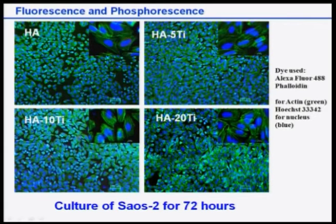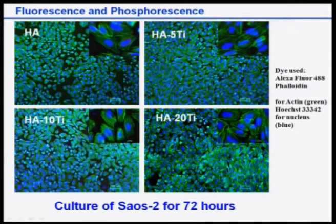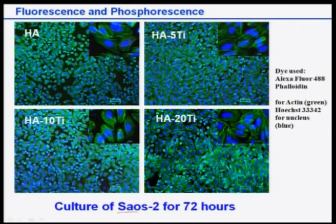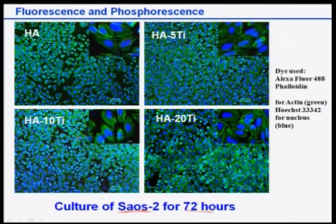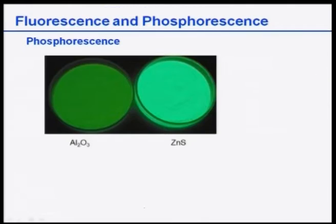This technology uses the concept of fluorescence to probe cell growth on materials. There are many dyes which can be used to tag different parts of a cell and study their behavior when exposed to external stimuli. These are actually SOH2 sarcoma cells cultured for 72 hours, not human osteoblasts — this is how fluorescence tagging can be applied.